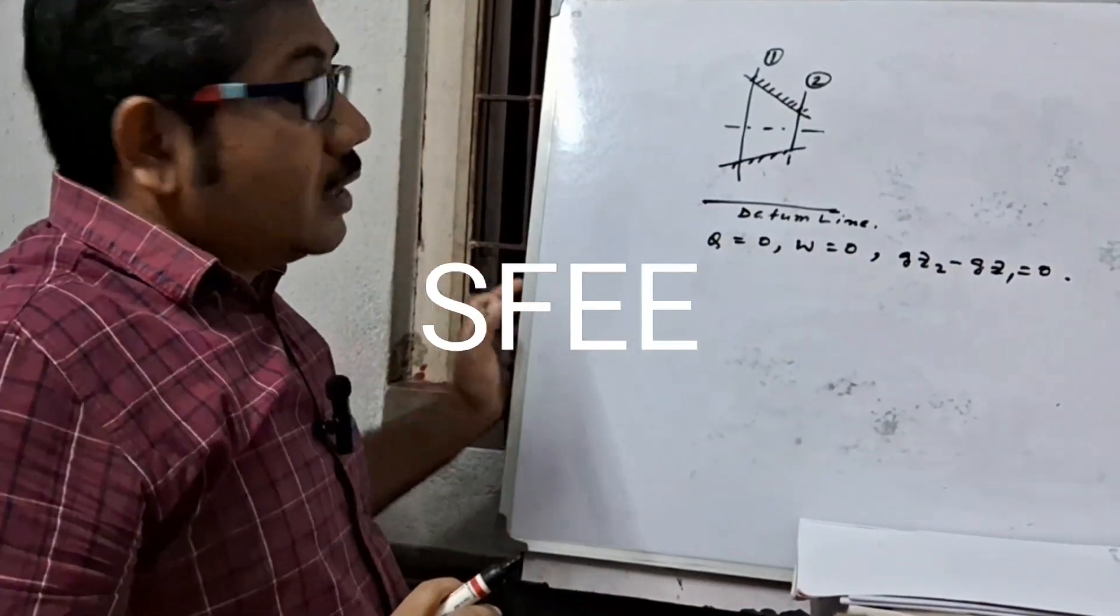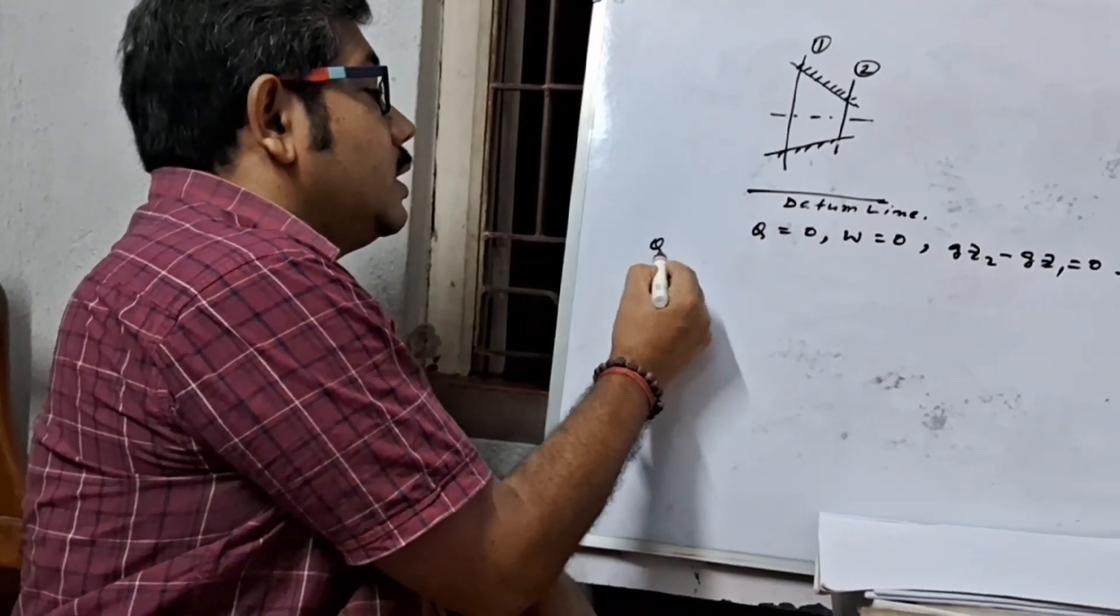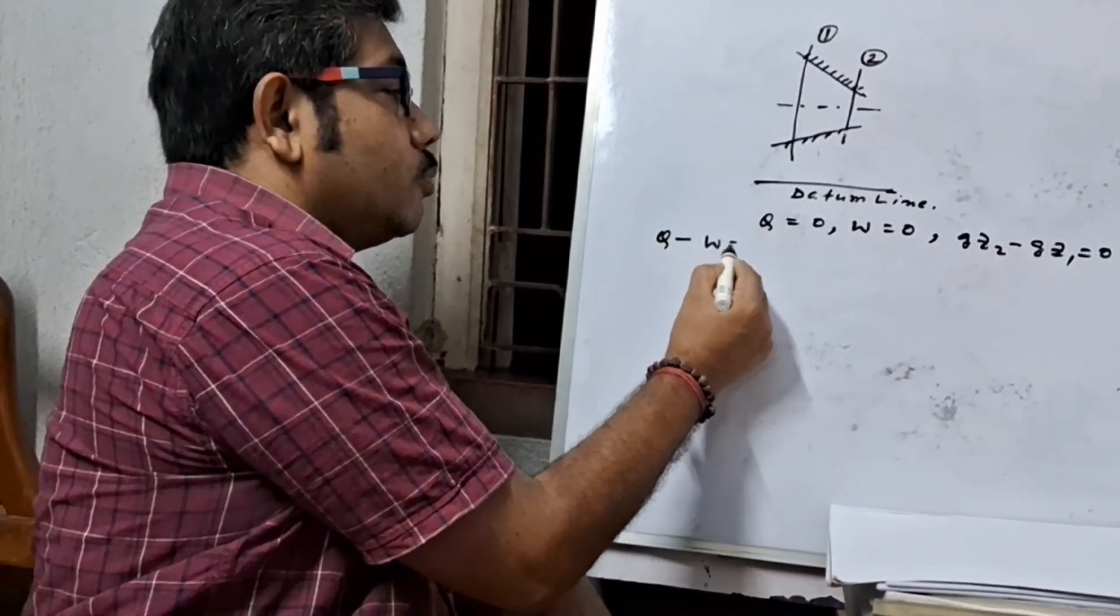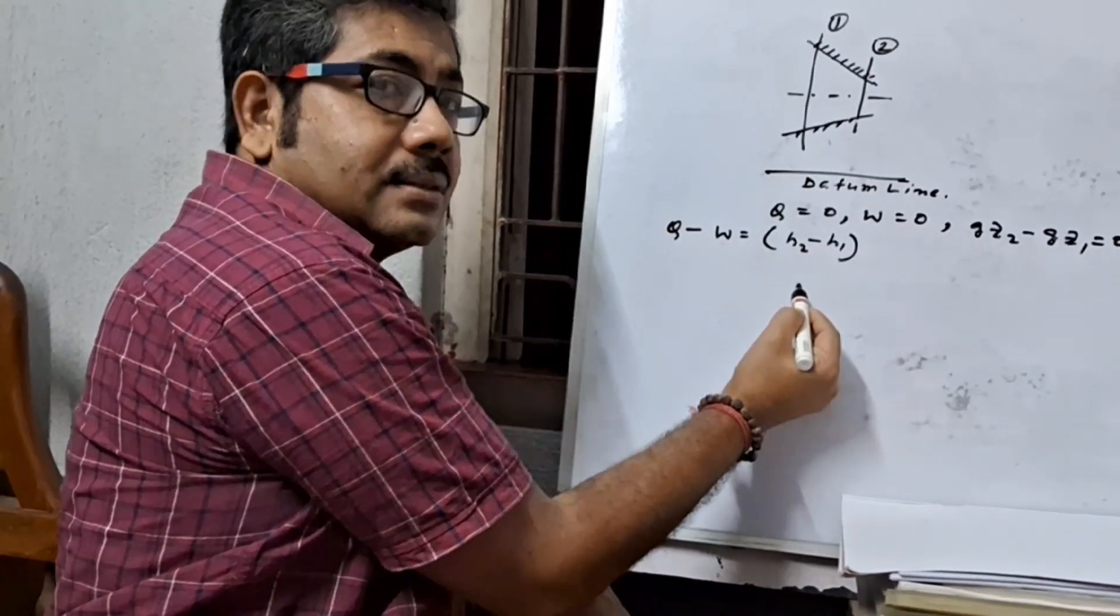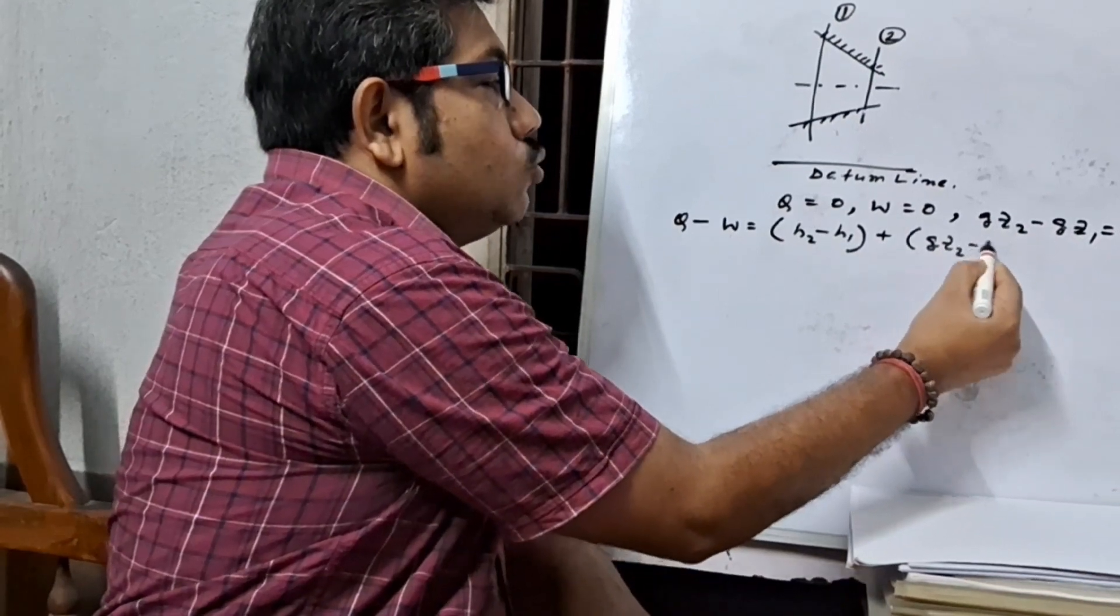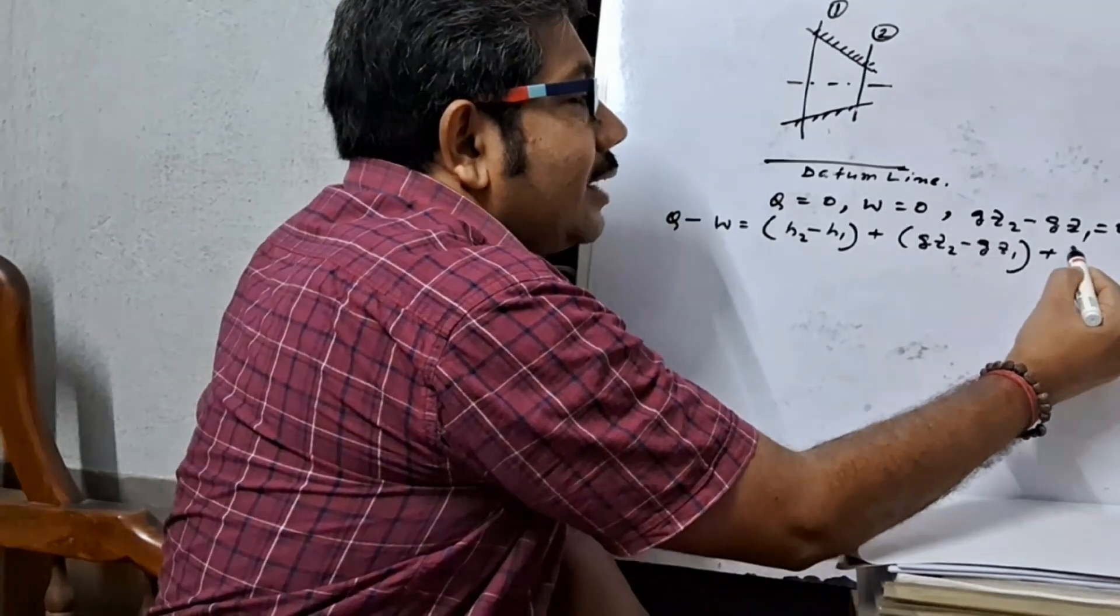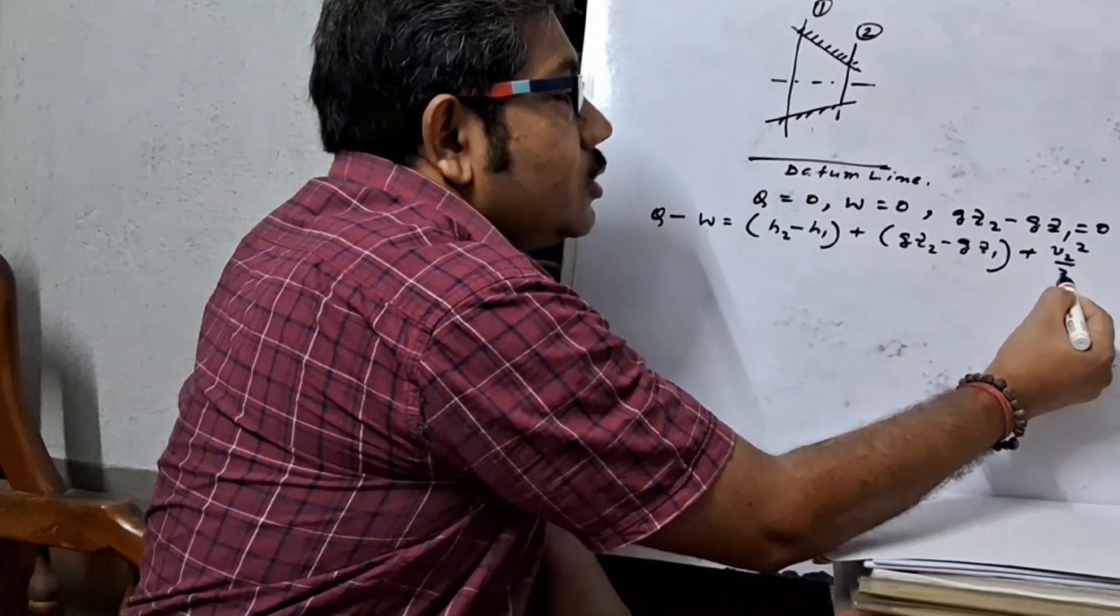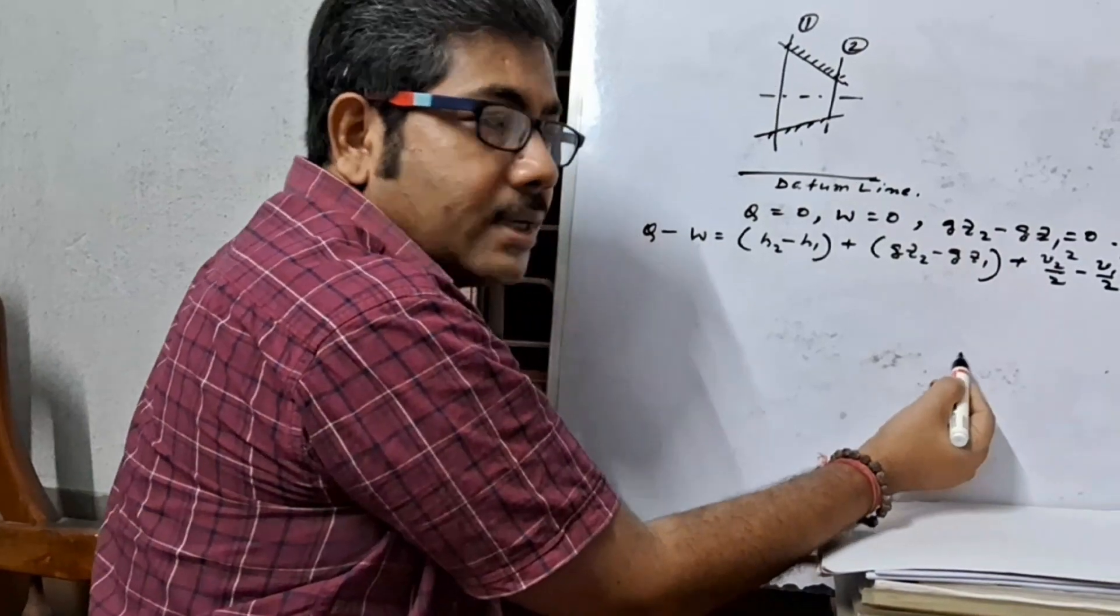We know that from steady flow energy equation, q minus w equals h2 minus h1 plus gz2 minus gz1 plus v2 squared by 2 minus v1 squared by 2.